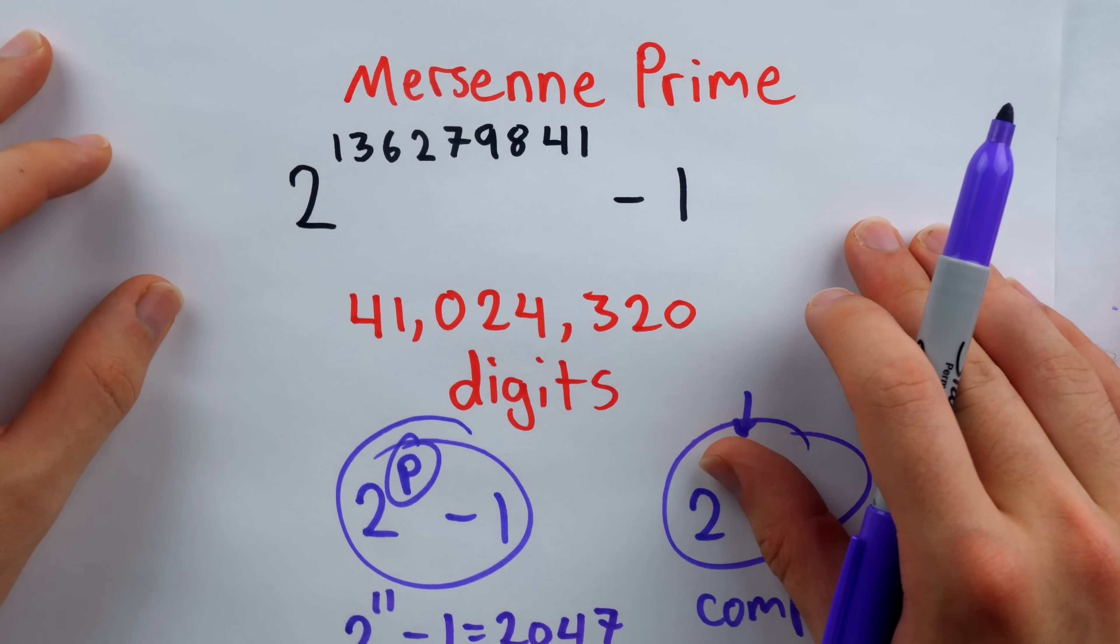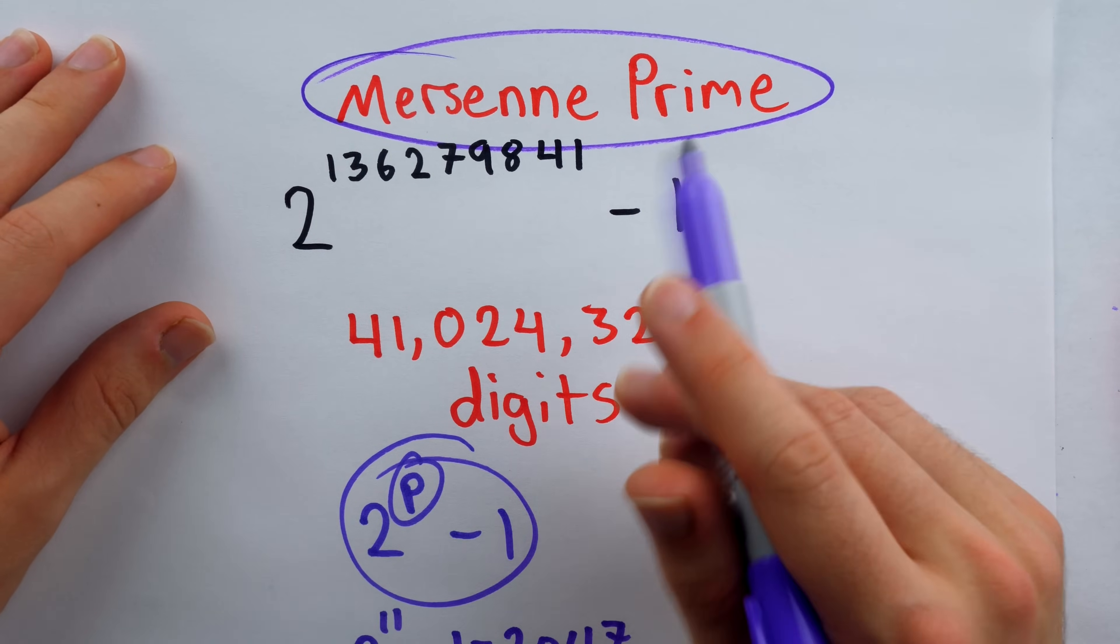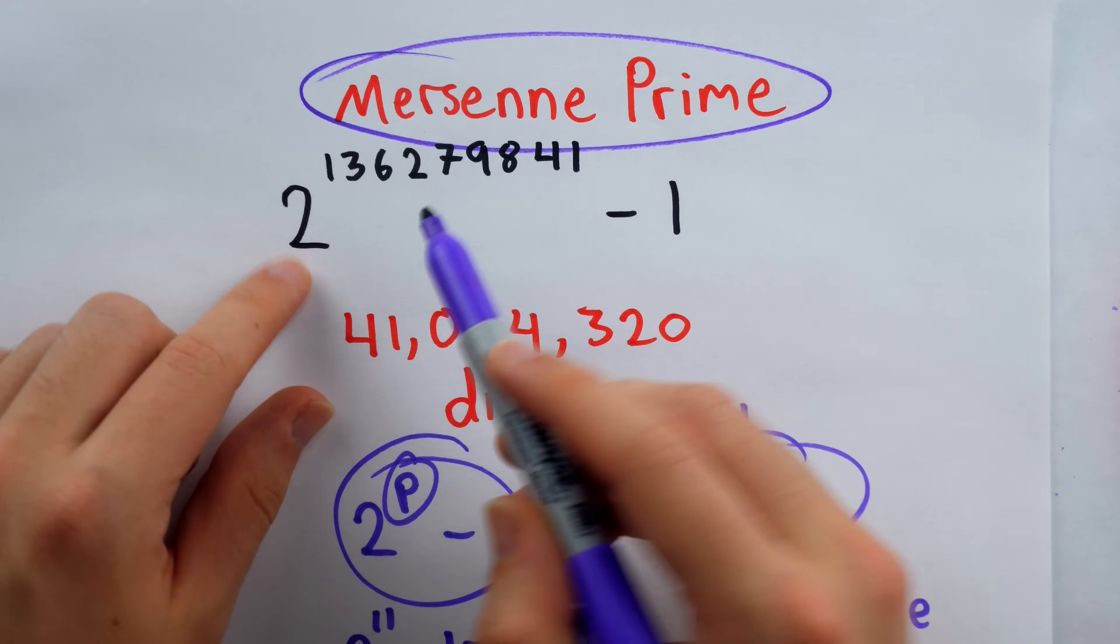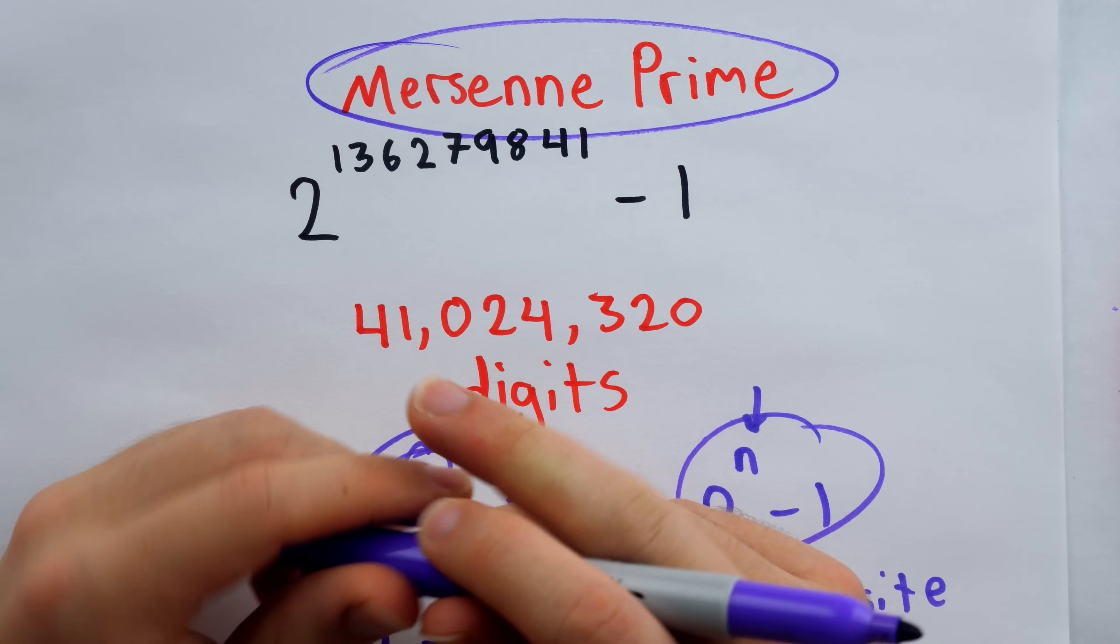But why is it the case that so many of the largest known prime numbers are taking on the form of Mersenne primes? Well, it's just because when we get to numbers of this size, naturally verifying whether or not they're prime, checking that fact, is very computationally demanding.